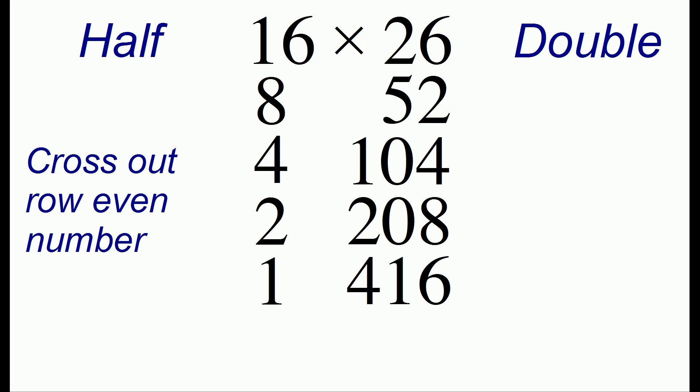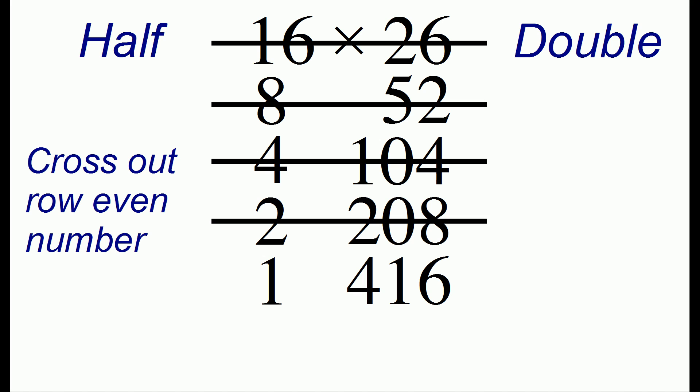The third step is to cross out any row in our table that starts with an even number. And in this table, we have a lot of even numbers. So we cross out the first row, the second row, the third, and the fourth row.